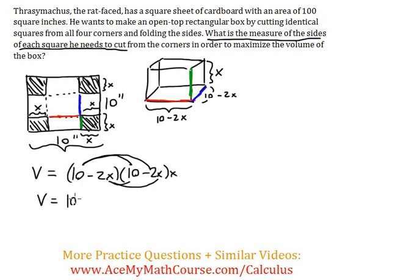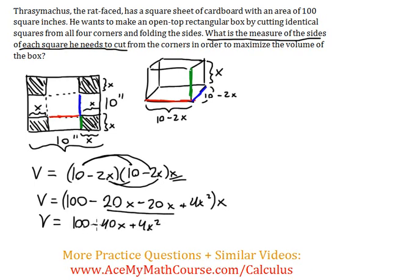So 10 times 10, 100. Minus 20x. Minus 20x. Plus 4x squared. And the x, there's another x here waiting. And that will get distributed, but first I guess I'll just combine these two. So I get 100 minus 40x plus 4x squared times x. So once I distribute the x, I get 100x minus 40x squared. Plus 4x cubed. Great.